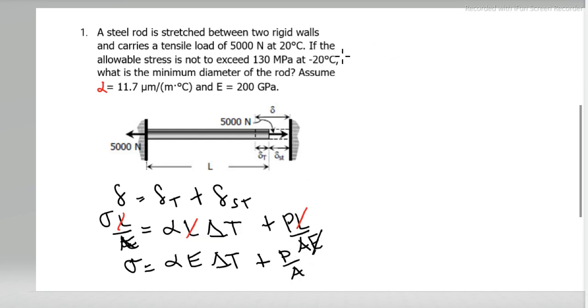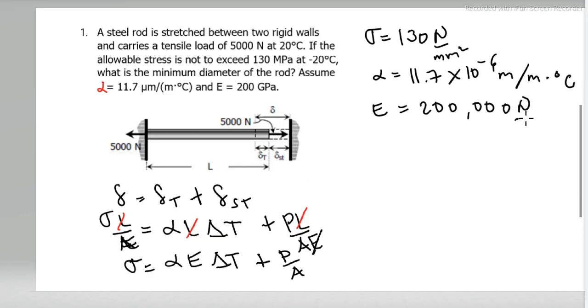So the given total stress is 130 megapascal, linear coefficient is 11.7 times 10 to the negative 6 per meter degree Celsius. Convert to meters right away. And then E, modulus of elasticity is 200 gigapascal or 200,000 megapascal.